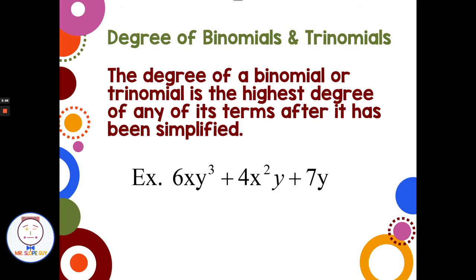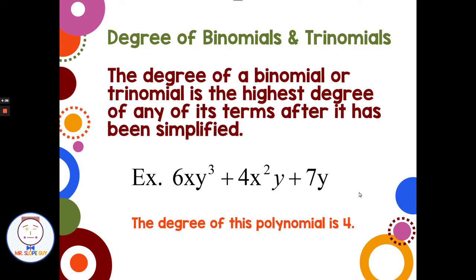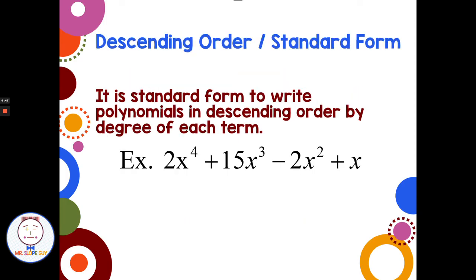Now let's look at the degree of a polynomial like a binomial or trinomial. The degree is the highest degree of any of its terms after it's been simplified. For example, if we have terms with degrees of 4, 3, and 1, the highest degree is 4, so the degree of the polynomial is 4.